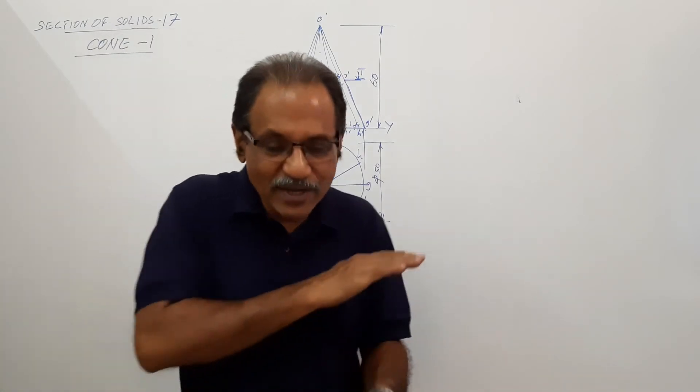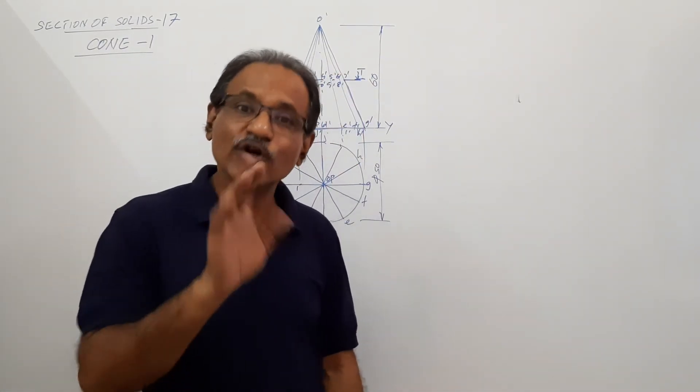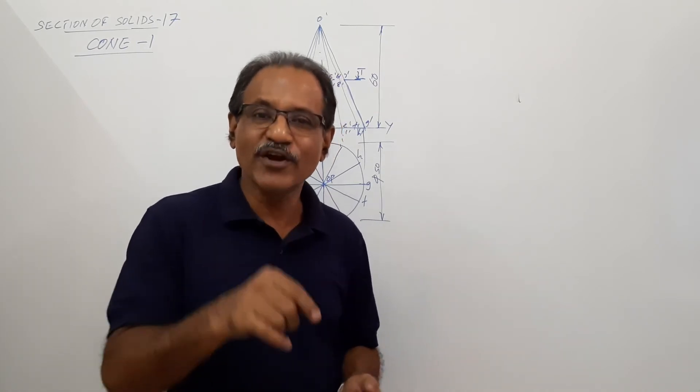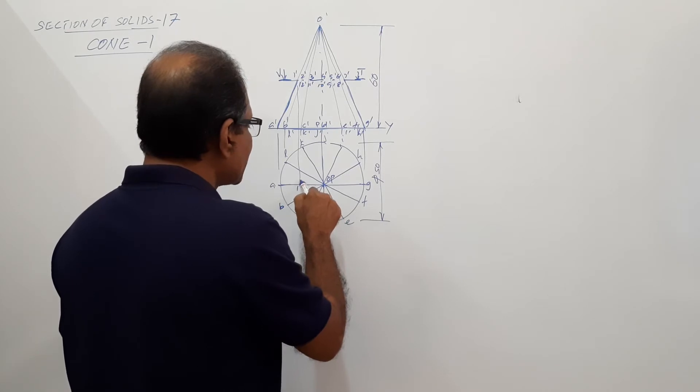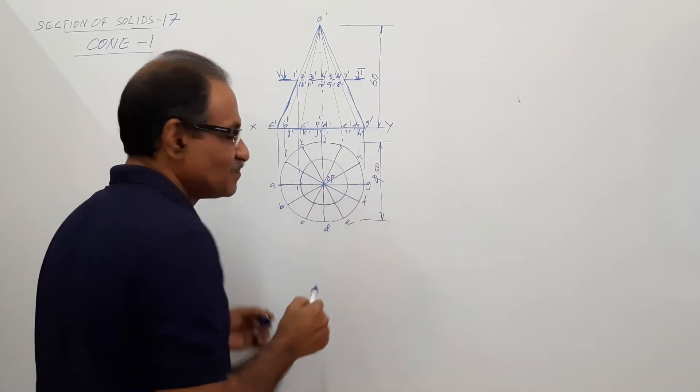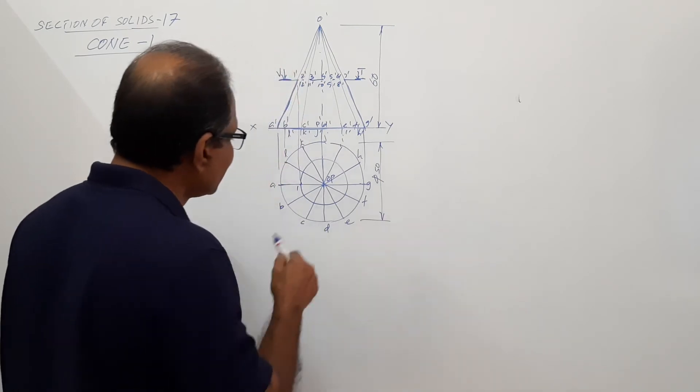Why do you get the circle? Because the cutting plane is parallel to the base, you get the circle. So what you have to do after getting one? O was center, O-one was radius. Draw a circle with your compass.